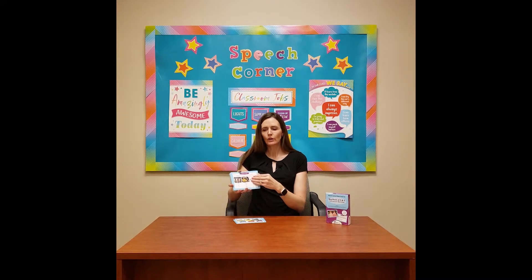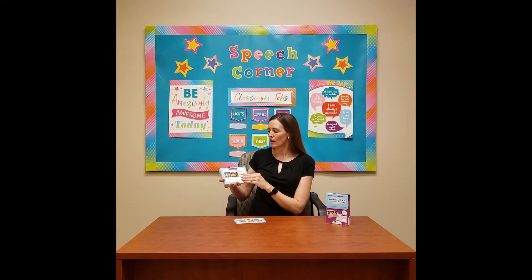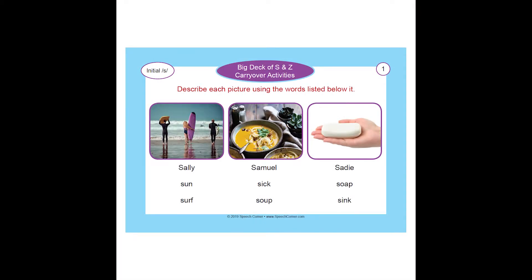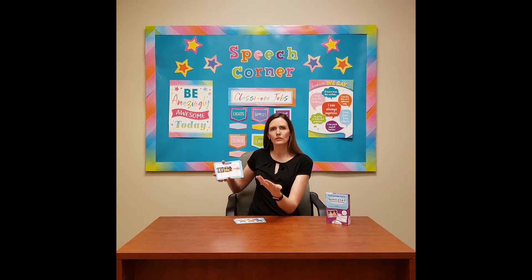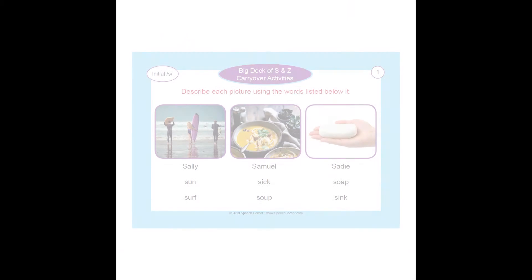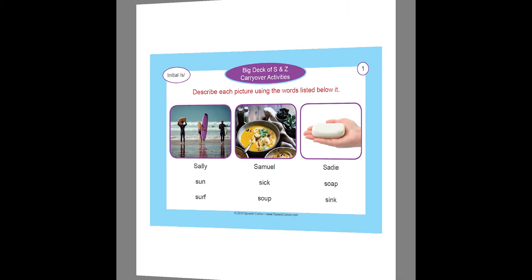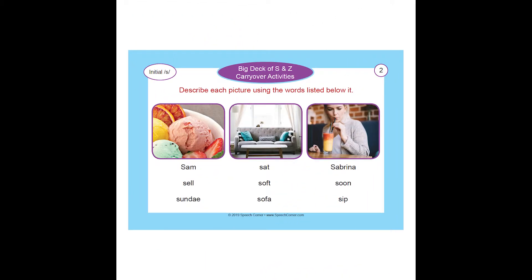When you look at the cards, they have a variety of activities. One of the activities is that you describe each picture using the three words listed below it. There's a small picture and three words that use your target sound, and the student uses them to describe or explain what's happening in the picture. The front and back of that card are the two activities.